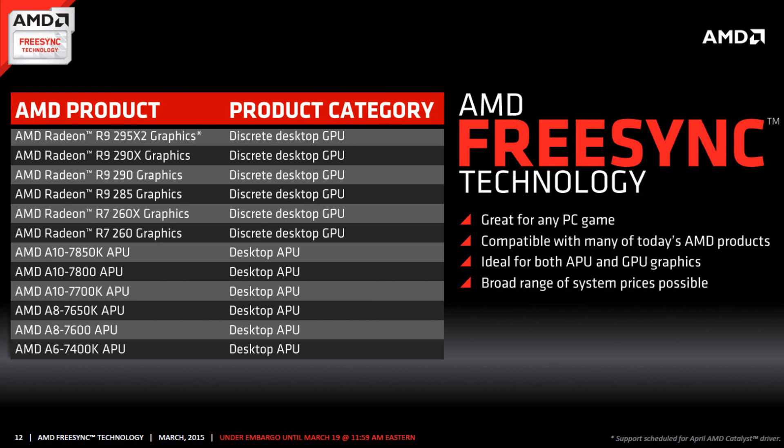Because FreeSync relies on the integrated display controller in an AMD card, it means FreeSync won't work with many older AMD GPUs — this is a lot more limiting. The R7 260 and the A6-7400K APU are the lowest GPU and APU you can use with it. And a lot of other popular GPUs from AMD's lineup, like the 280X, won't work with FreeSync because of their older architecture.